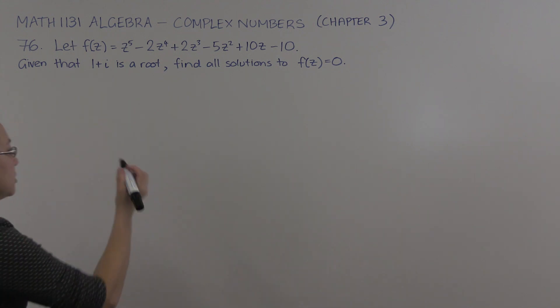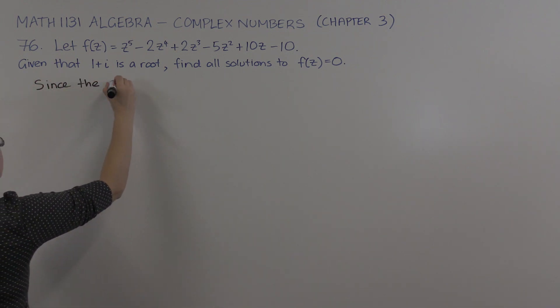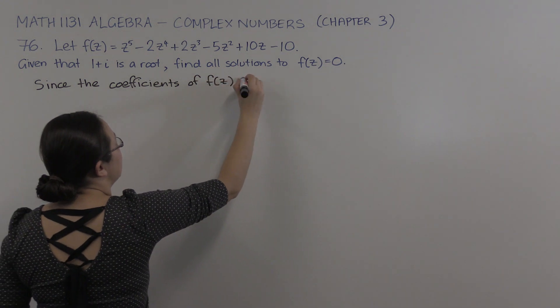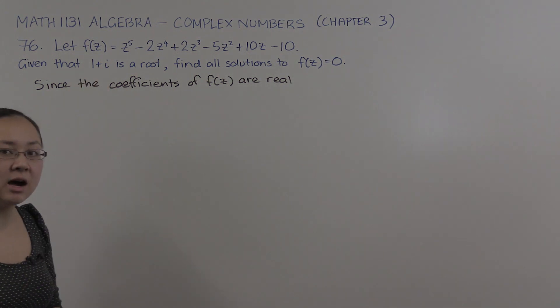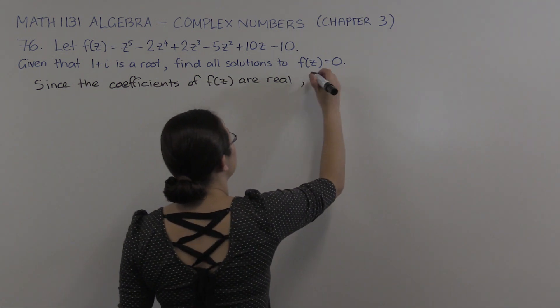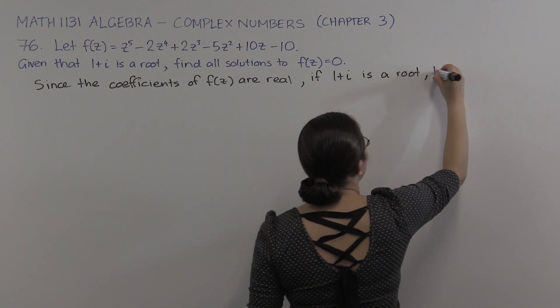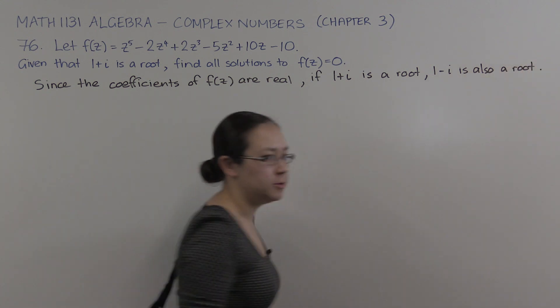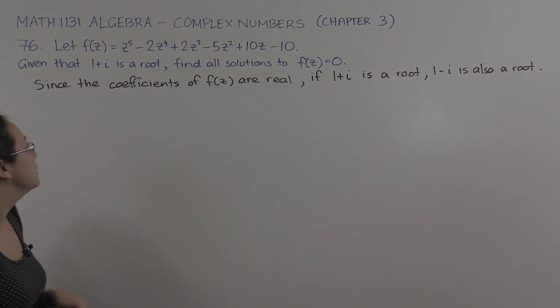So the first thing we need to notice is that the coefficients of f of z are real. Since the coefficients of f of z are real, what does that mean? It means that if we've got a complex root, 1 plus i, its conjugate is also a root. And that's quite a useful fact. So if 1 plus i is a root, 1 minus i is also a root. Complex roots come in conjugate pairs as long as the coefficients of your polynomial are real, which they are here.